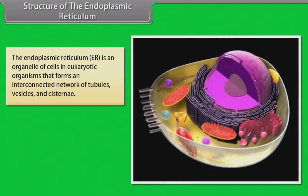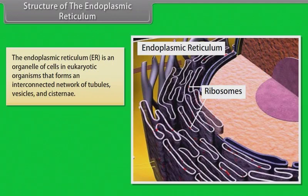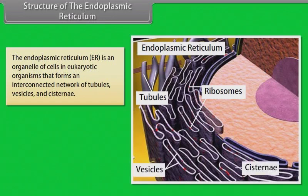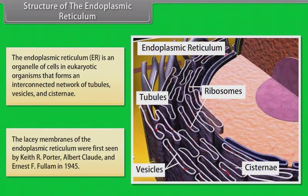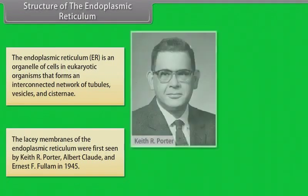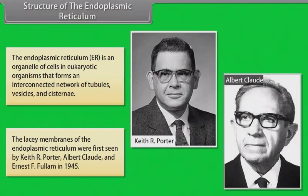The endoplasmic reticulum (ER) is an organelle of cells in eukaryotic organisms that forms an interconnected network of tubules, vesicles and cisternae. The lacy membranes of the endoplasmic reticulum were first seen by Keith R. Porter, Albert Claude and Ernest F. Fulham in 1945.